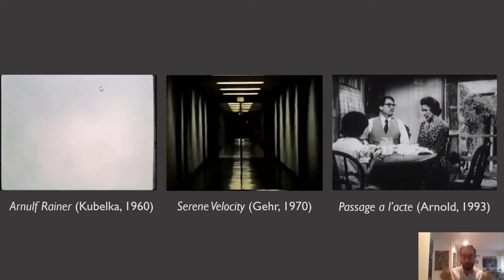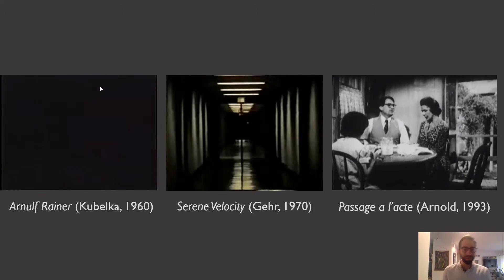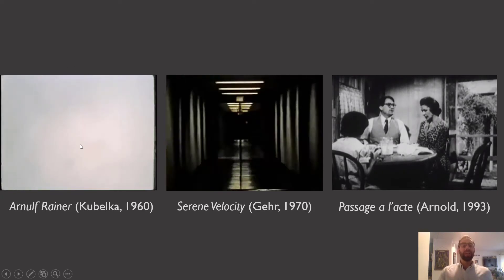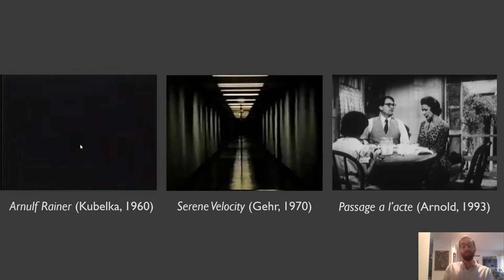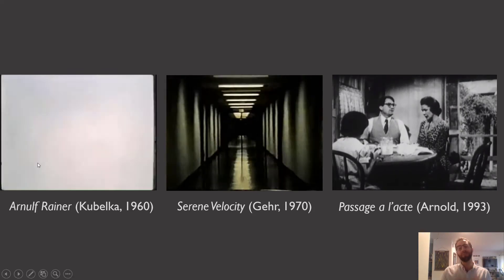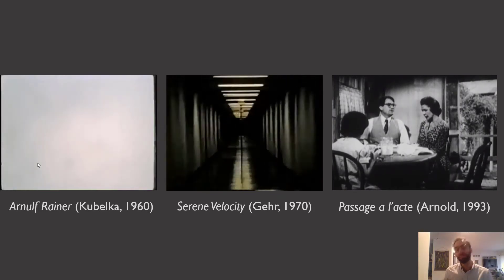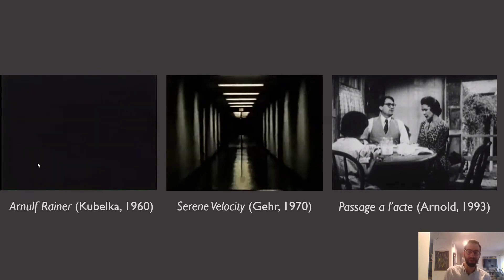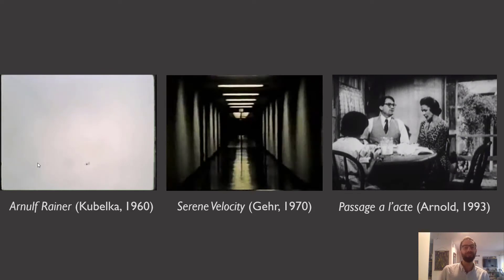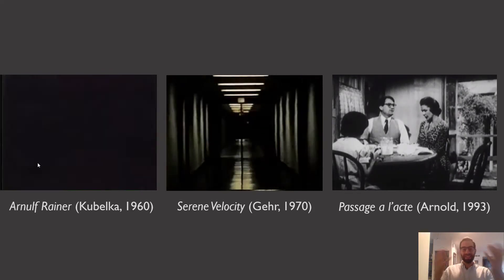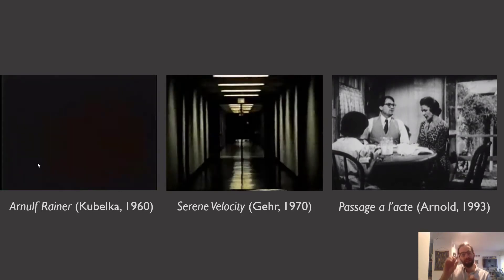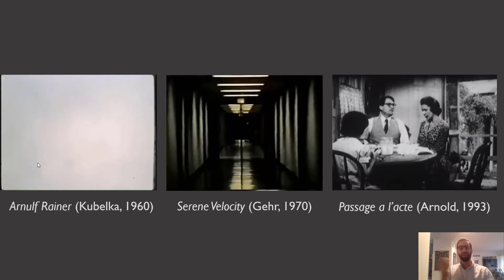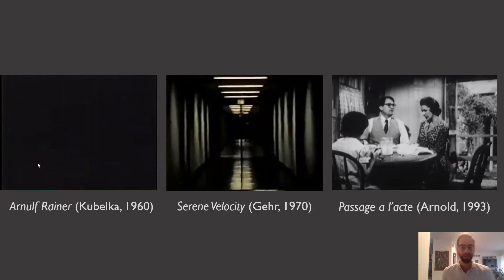Think of films like Arnold Kubelka's flicker film from 1960, in which you can't help but face the truth that cinema is made up of discrete images — you don't see continuous movement, you see discrete images flashing before you. A similar effect is created in Ernie Gehr's 1970 film Serene Velocity. It's interesting to think of this film with respect to Baudry's project overall, because you get a perfect linear perspectival image of a hallway, but you don't get a smooth continuous feeling of moving forward through space — you feel the discontinuous relationship between images that are basically just different focal lengths juxtaposed.